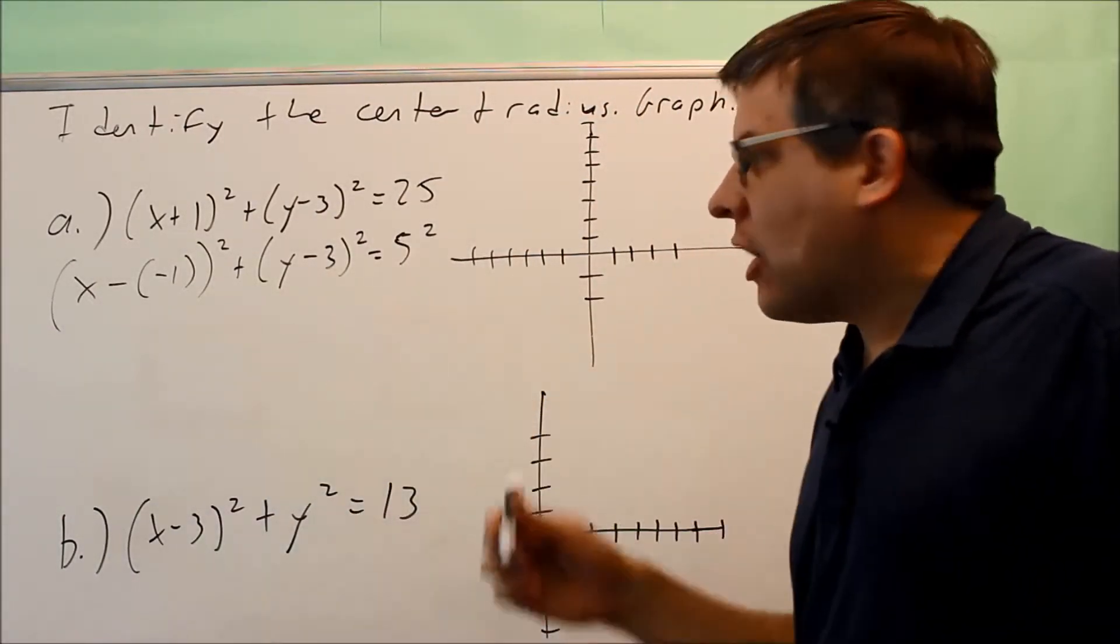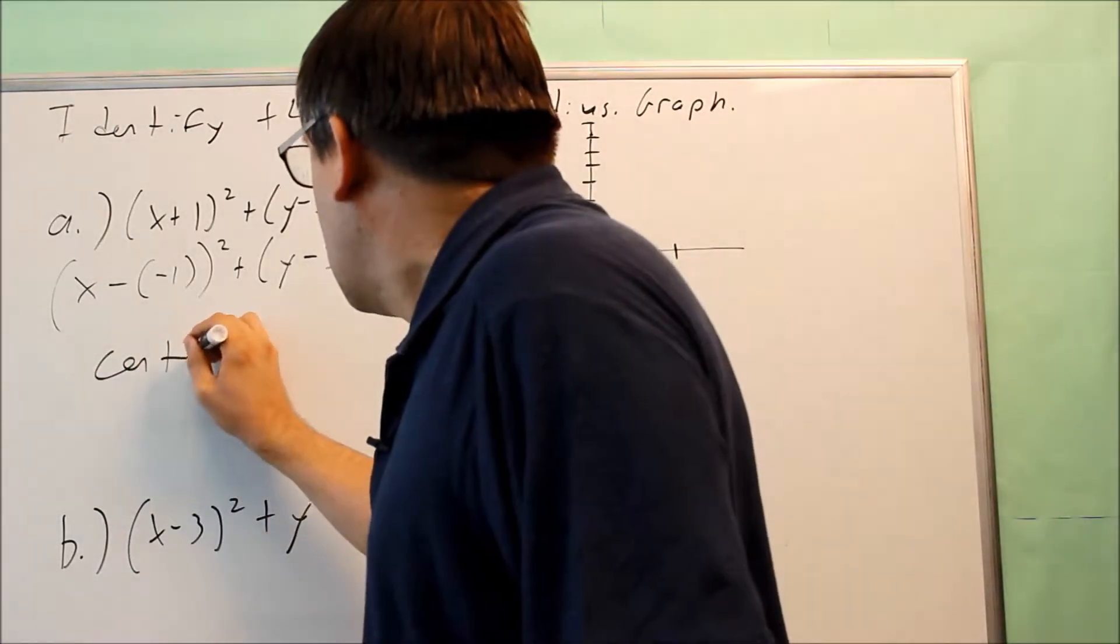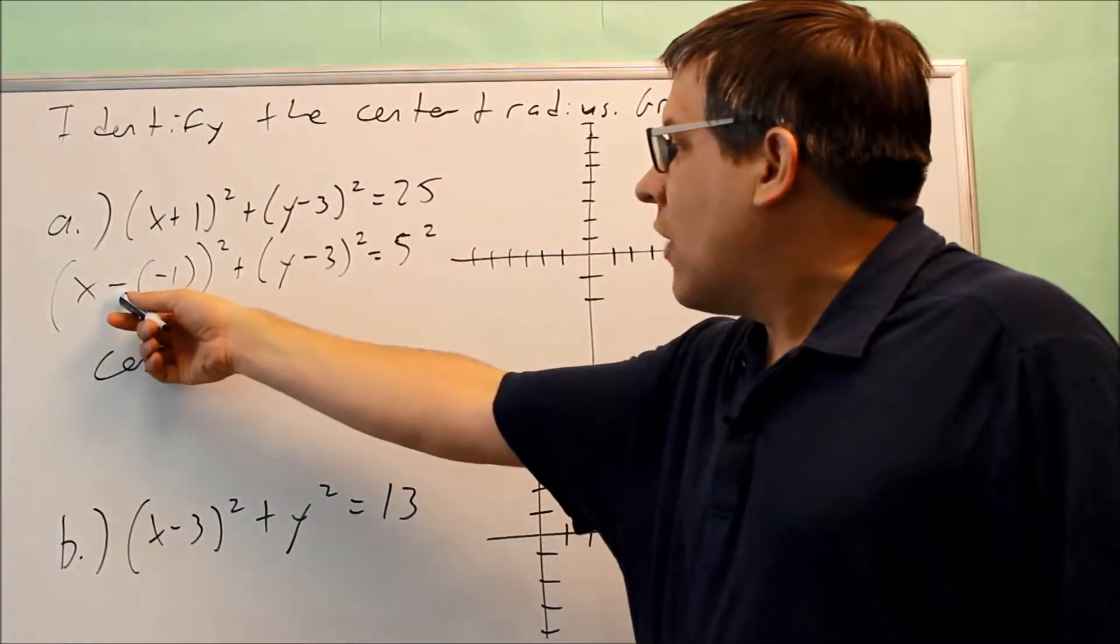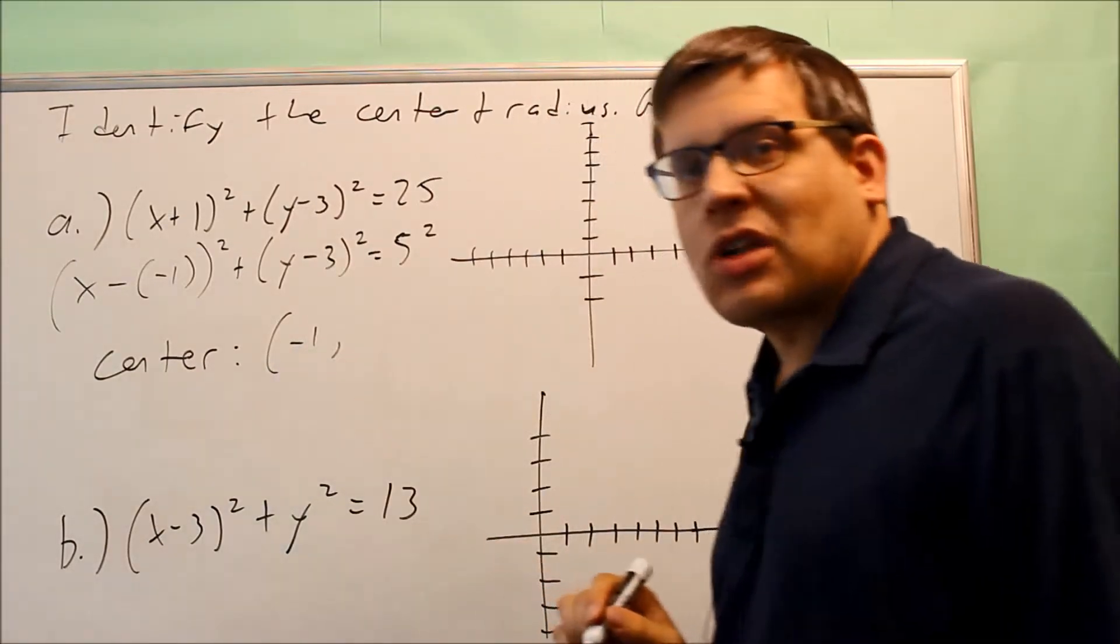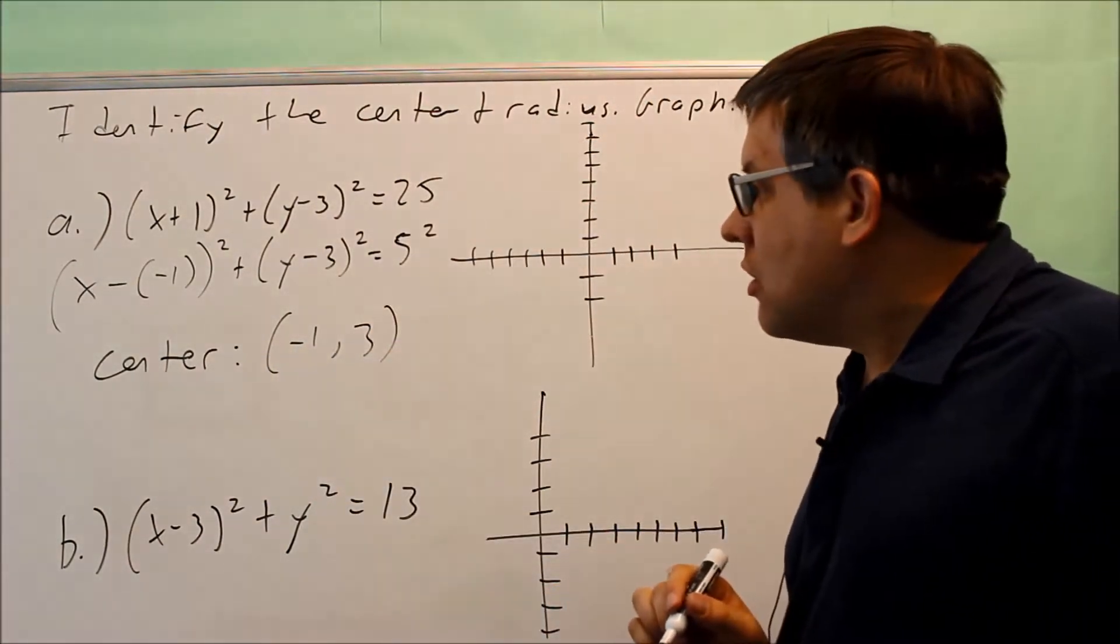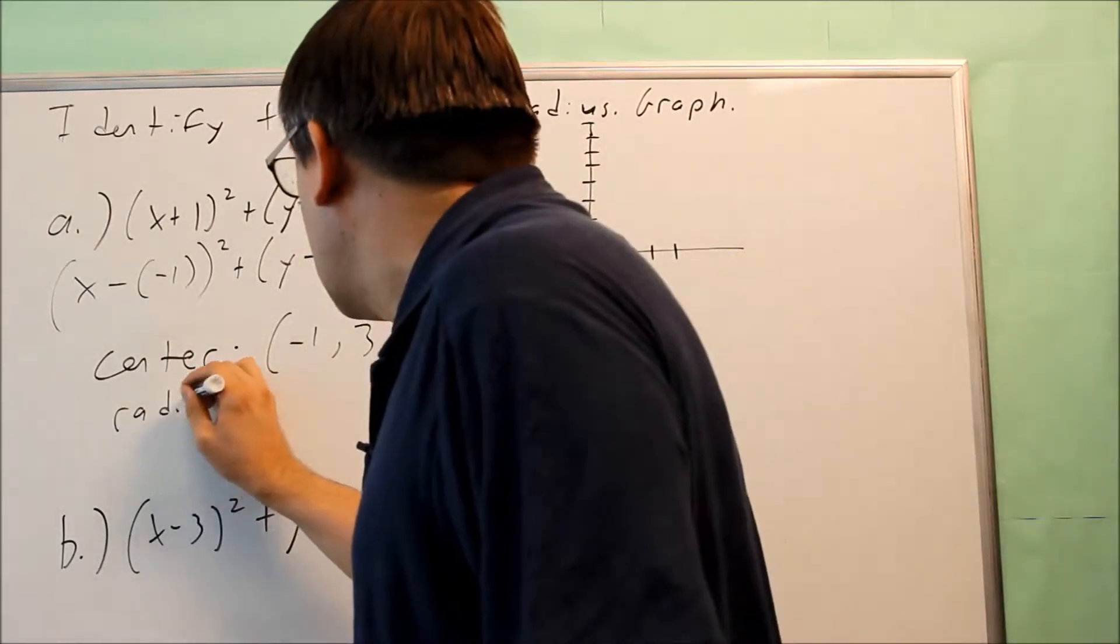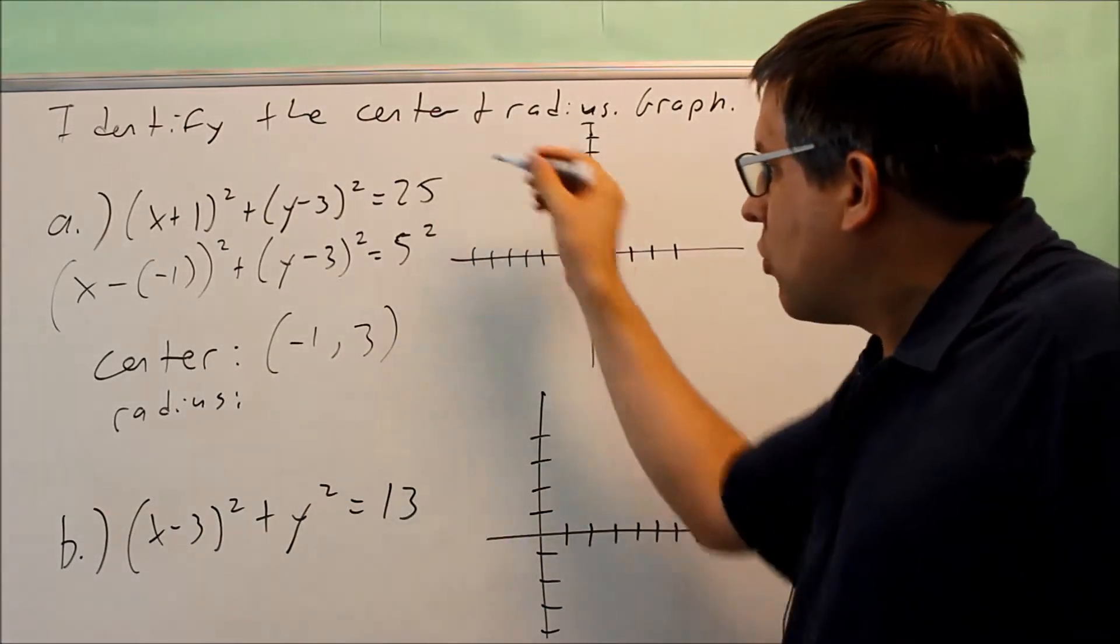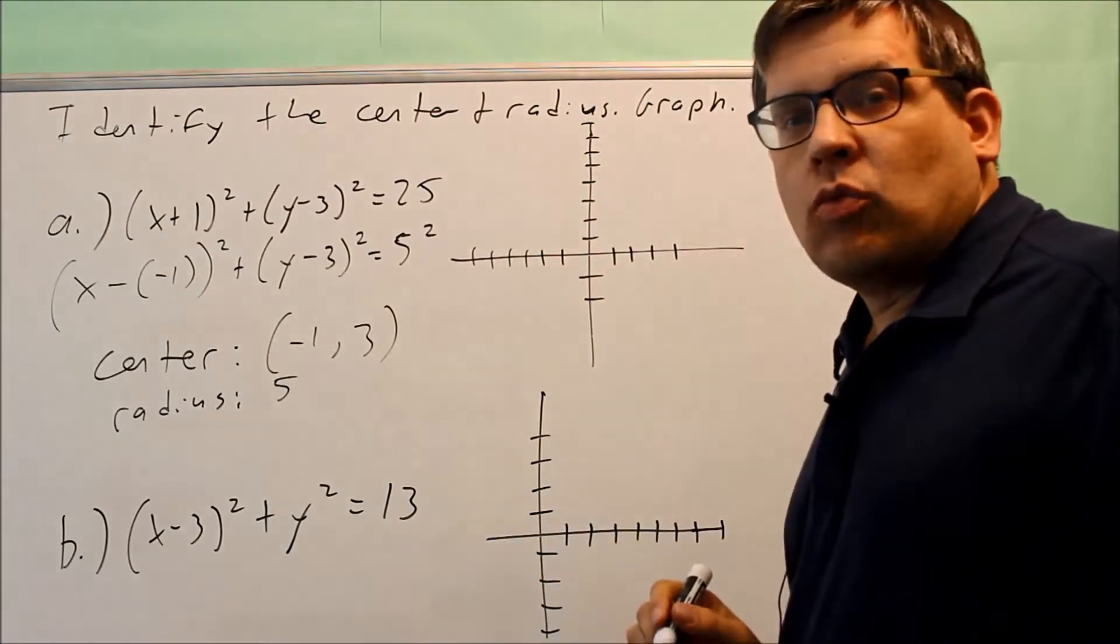And then 25. 25 can be written as 5 times 5 or 5 squared. So with it written in this form, now I'm ready to find the center and the radius. The center is going to be whatever the h value is, the number right after this first minus, so the h value is going to be negative 1. The y value is going to be 3, so the center is negative 1, 3. The radius is the number that's being squared, so it's not 25, it's 5.